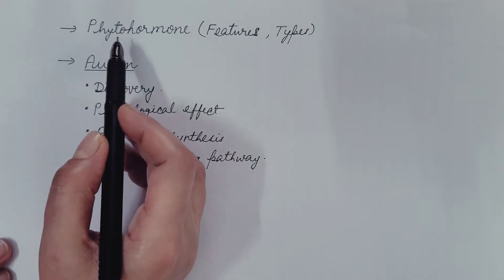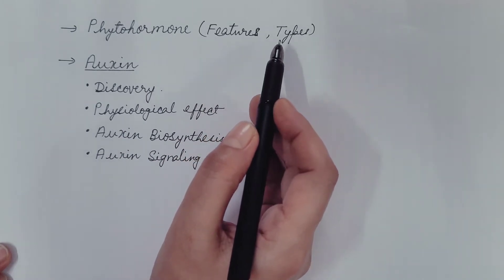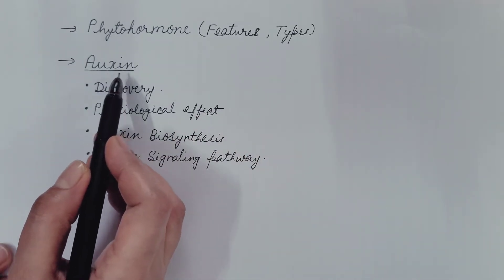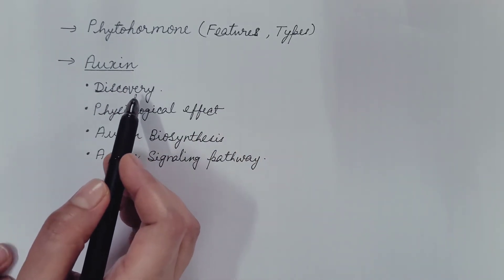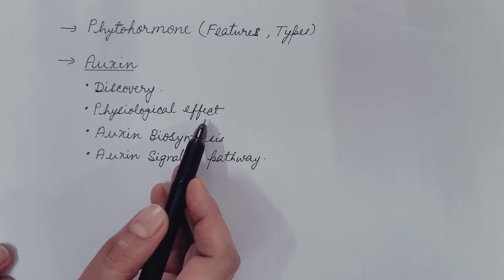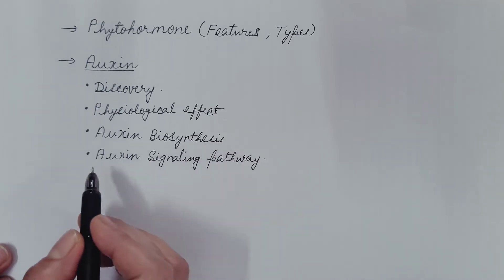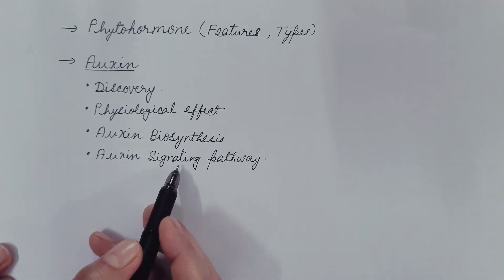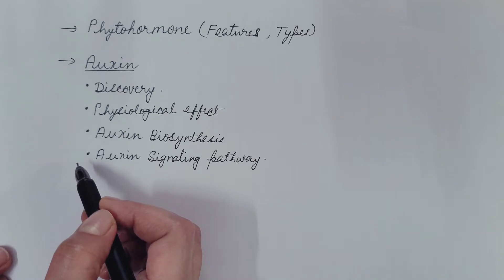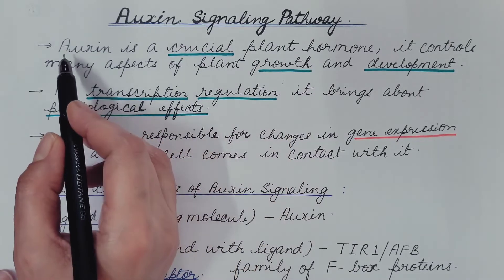Hello friends, we have started with the discussion of phytohormones or plant hormones. We discussed its features, types of phytohormones, and started with auxin — its discovery through various experiments, physiological effects, and biosynthesis pathways. Today we are going to discuss the auxin signaling pathway. You can refer to my previous videos; the link is given in the description box.